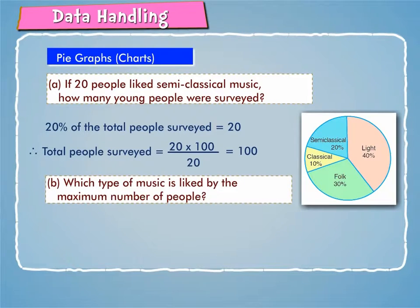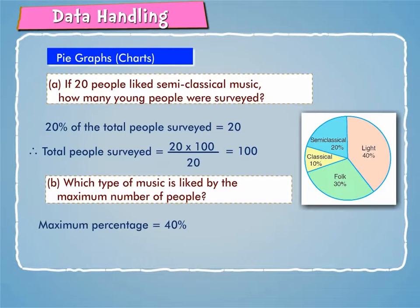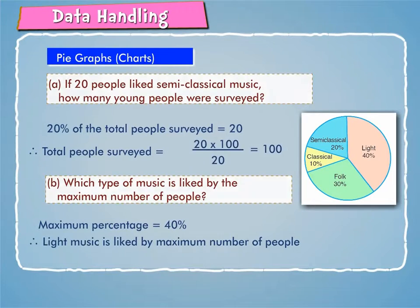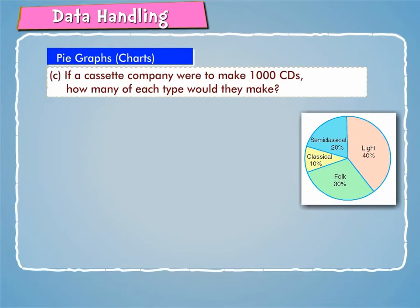Which type of music is liked by the maximum number of people? The maximum percentage is 40%. Therefore, light music is liked by the maximum number of people.